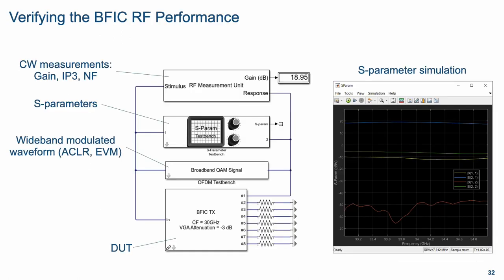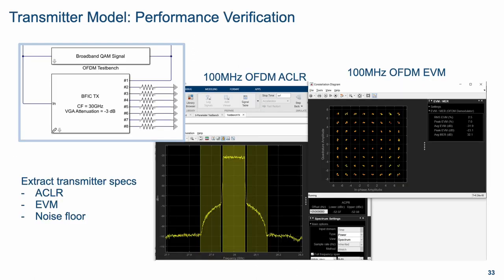Of course, we verified the model. We did many simulations with different test benches to verify that the model correctly predicted gain, IP3, noise figure, S-parameters, and also streaming modulated waveforms such as OFDM signals, looking at the characteristics of the transmitter and receiver output in terms of EVM and ACLR. As an example of transmitter model verification, we streamed an OFDM signal, measured ACLR in the spectrum, and measured EVM using a reference OFDM receiver operating on 100 MHz bandwidth. We also did simulations up to 400 MHz bandwidth with different standard signals such as 5G FR2 and DVB-S2X signals.